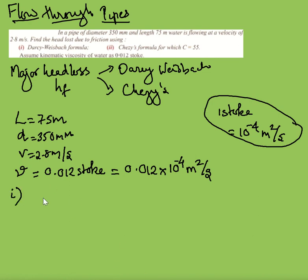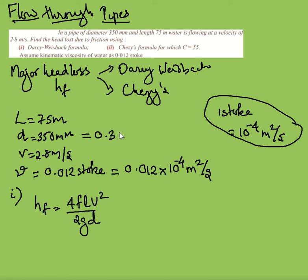The Darcy-Weisbach equation is: HF = 4FLV² / (2gD). Here, L = 75 meters, V = 2.8 meters per second, and D = 350 mm = 0.35 meter. We also need the coefficient of friction F, which is a function of Reynolds number.